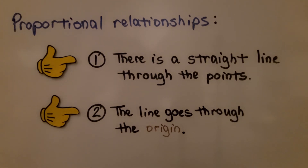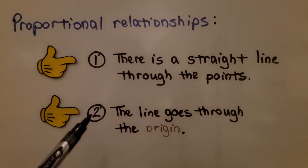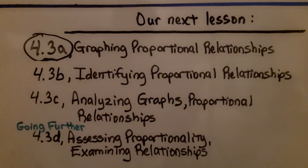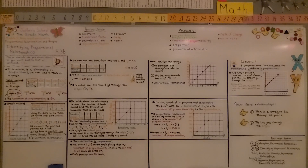To summarize proportional relationships: there are two things — a straight line through the points, and the line goes through the origin. We're finished with 4.3b and moving on to 4.3c, which covers only analyzing graphs of proportional relationships. If you find these lessons helpful, share them with your friends, hit the like button, and join me for the next part of the lesson.